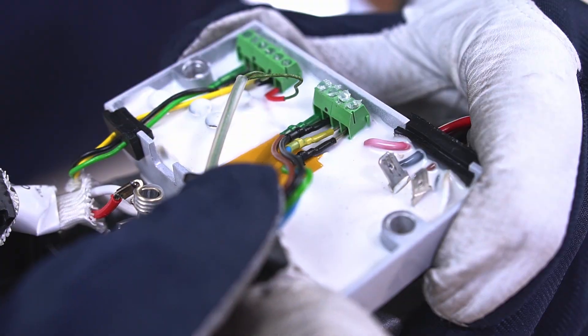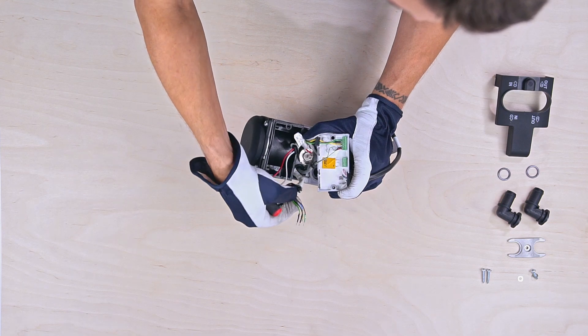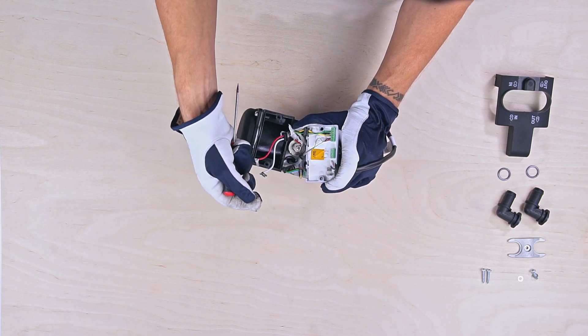Moving on, remove the flame sensor wires. Remember, the black wire goes in the connector marked with a black dot.